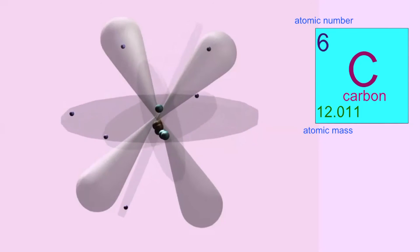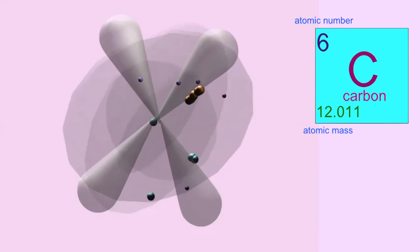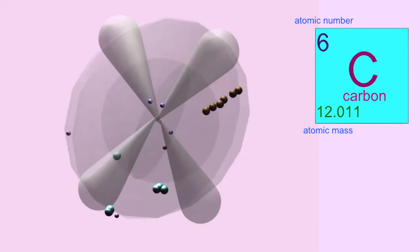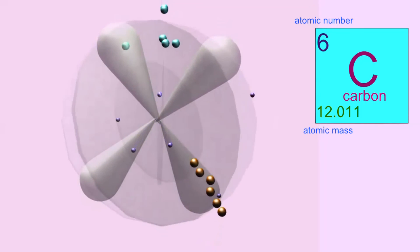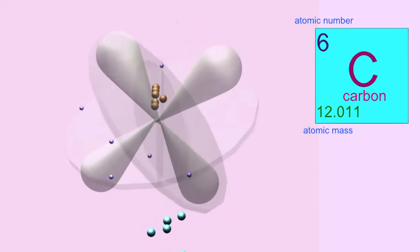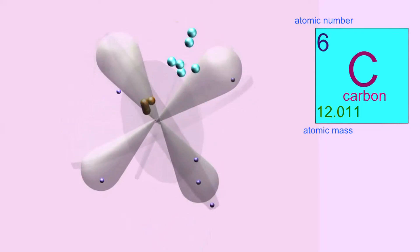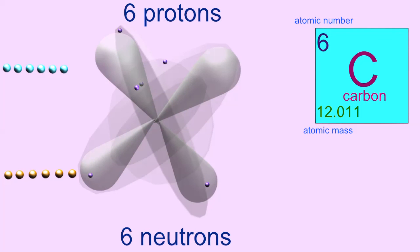The element carbon has the symbol C. Its atomic number is 6, indicating that there are six protons in the nucleus and six electrons in a neutral atom. The atomic mass number is 12, because the average carbon atom possesses 12 heavy particles in the nucleus, six of which are protons, and in the typical carbon atom, six of which are neutrons.